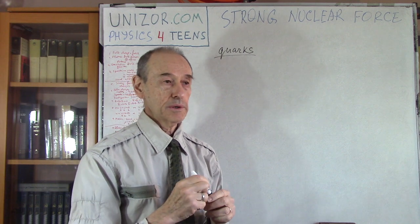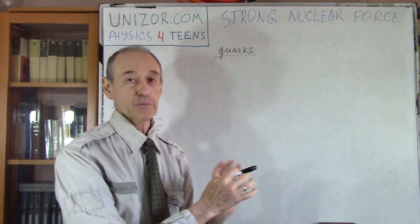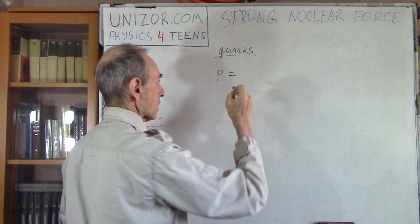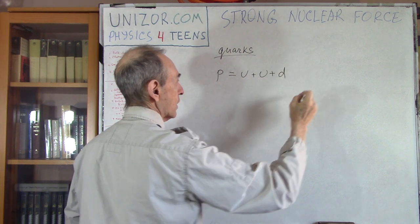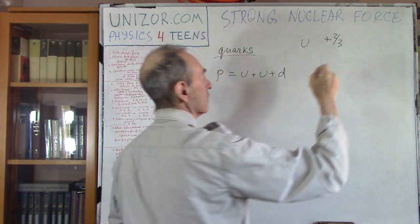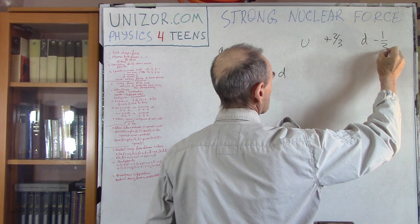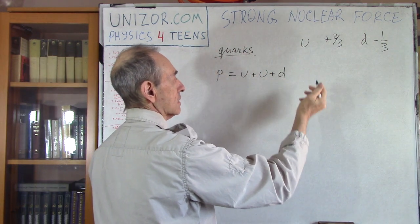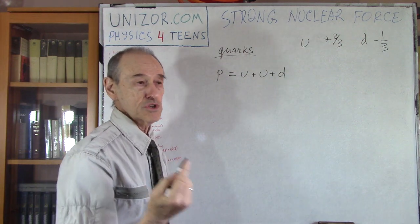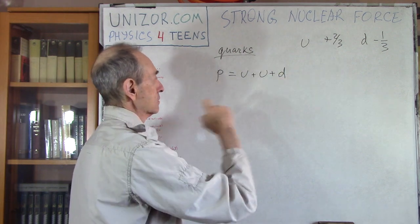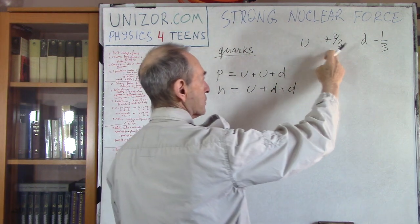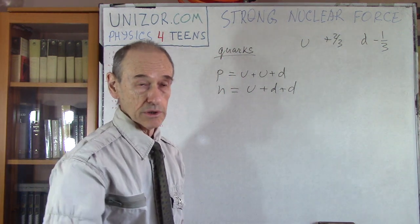According to contemporary view, a proton is a combination of three quarks: two up quarks and one down quark. Up quark has a plus two-thirds electric charge, and down has minus one-third. Two-thirds plus two-thirds minus one-third equals one — that's one minimum unit of charge, the same as a proton. A neutron has one up and two down quarks: plus two-thirds minus one-third minus one-third equals zero — so neutron is electrically neutral.